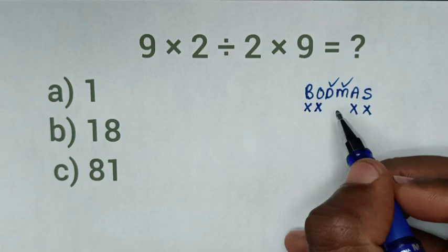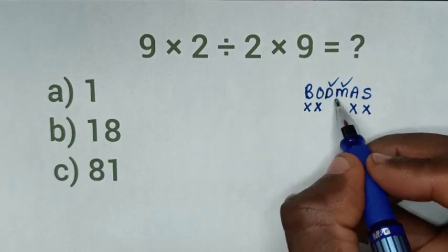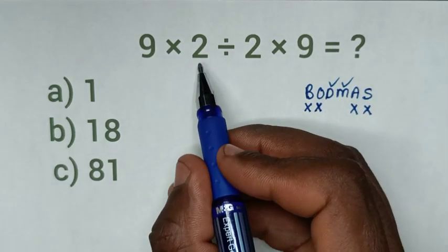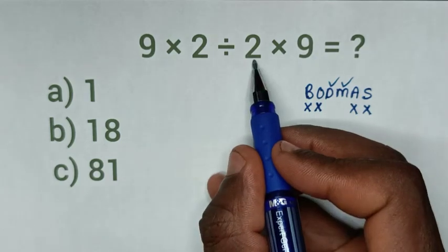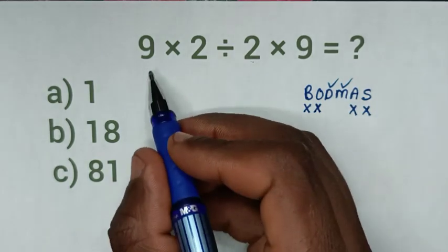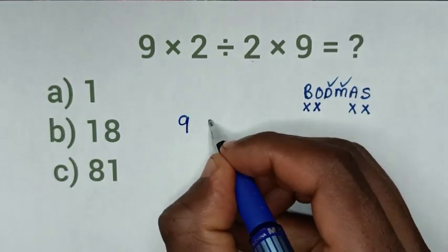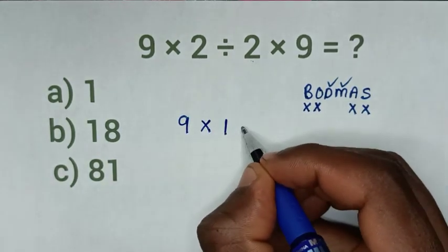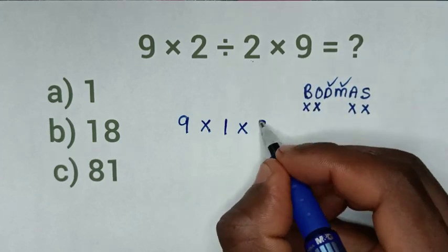So first, we start to deal with division. Whereas we have 2 divided by 2. Then, as 2 divided by 2 is 1, so it will be 9, then times 1, then times this, 9.